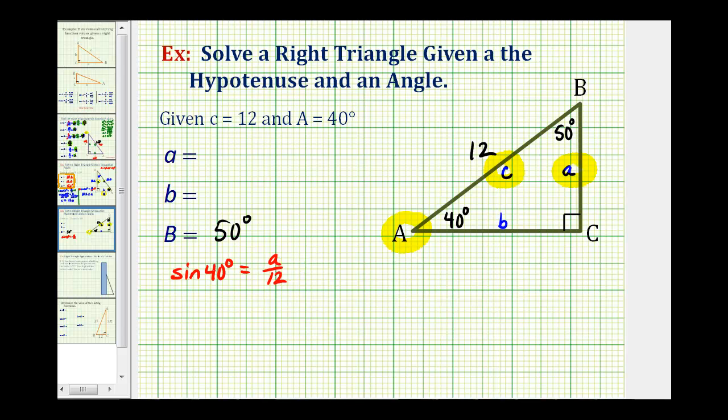Now we need to solve this equation for A. We'll multiply both sides by 12. So the right side simplifies to A. So A is equal to this product here, which we'll approximate using the calculator.